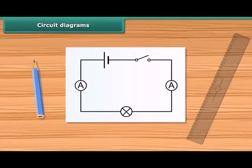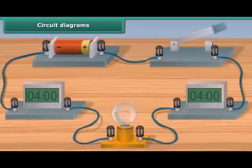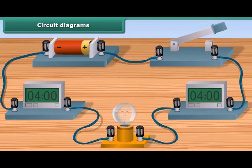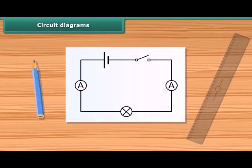A circuit diagram is a simplified representation of an electrical circuit. It is a drawing using standardized symbols of the arrangement, showing how electronic components are connected together.